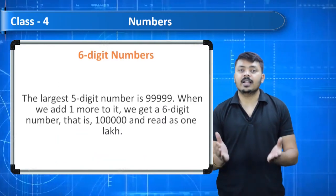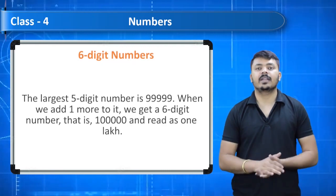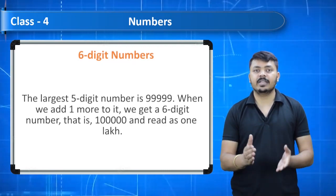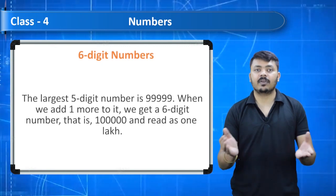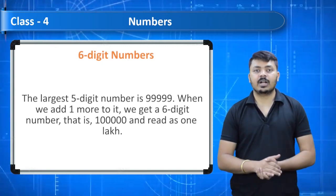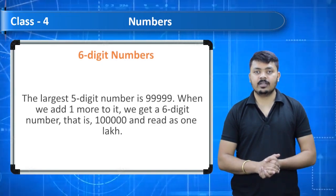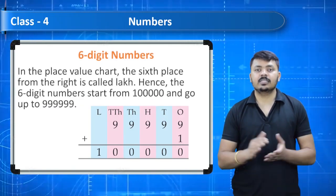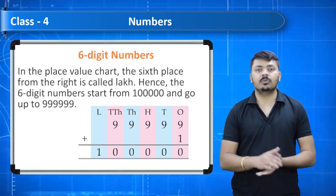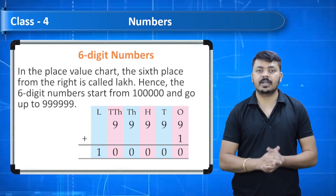Six-digit numbers: the largest five-digit number is 99,999. When we add one more to it we get a six-digit number — 1,00,000, read as 1 lakh. In the place value chart, the sixth place from the right is called lakhs. Hence, six-digit numbers start from 1 lakh and go up to 9,99,999.